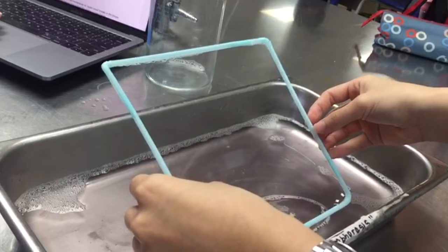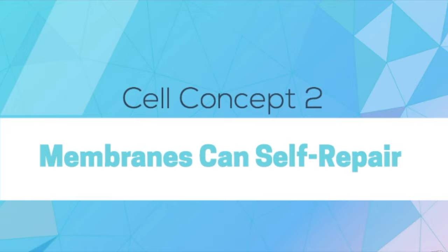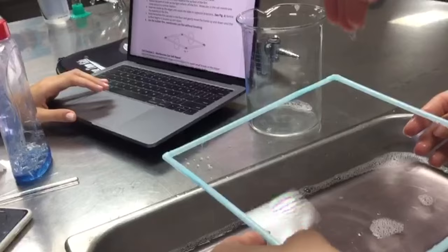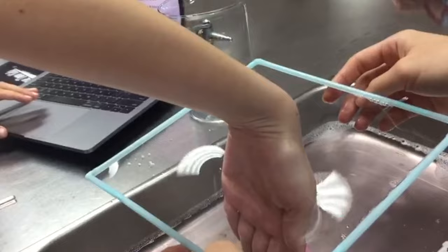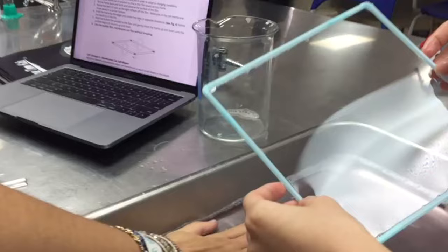Cell concept 2: Membranes can self-repair. As you can see, even with the whole hand going into the film, the film never breaks and when the hand is taken out of the film, it is able to go back to the same shape it was before. This is similar to the cell membrane because it is able to repair after there are breaks in the phospholipid bilayer.